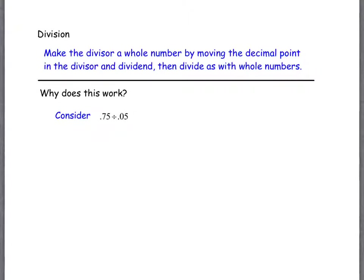Division is also a bit mysterious. The algorithm says: if I'm doing division, I should make the divisor — the number I'm dividing by — a whole number. So 0.05 becomes just 5. What did I have to do? I moved the decimal point 2 places to the right. So I move it 2 places to the right on the divisor, and I should also move it 2 places to the right on the dividend. It seems reasonable, but why does that work?